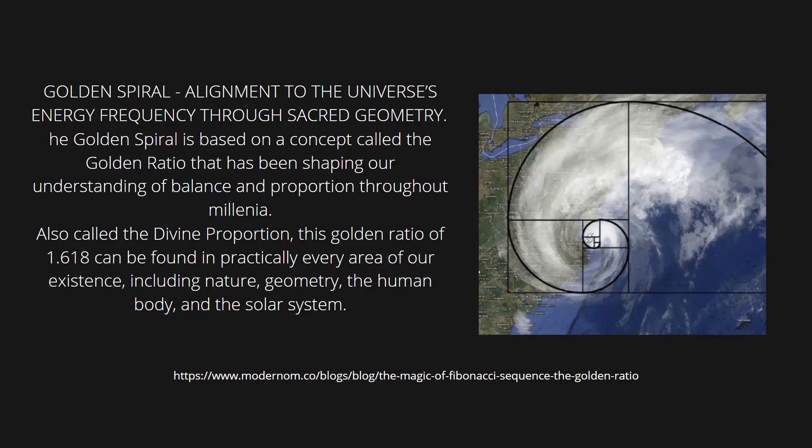It has been called many names throughout history — golden section, golden ratio, golden mean, the magic ratio — and it is one of the most famous formulas in mathematics. It is found practically everywhere in the universe. It is kind of a built-in numbering system to the cosmos, often called nature's secret code.